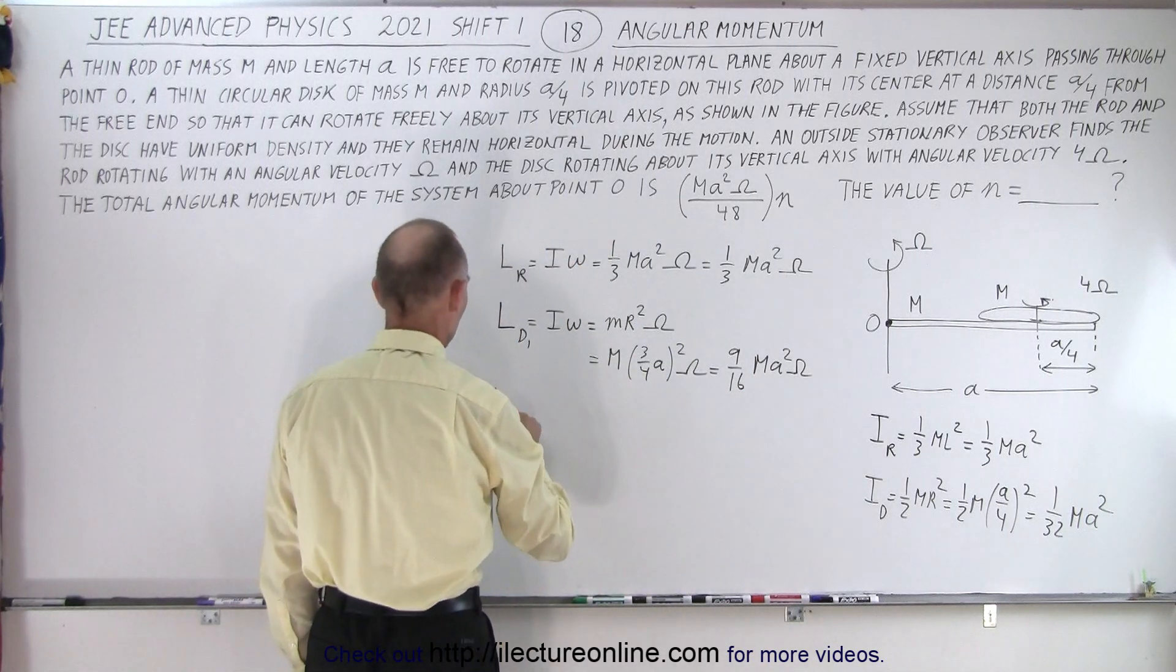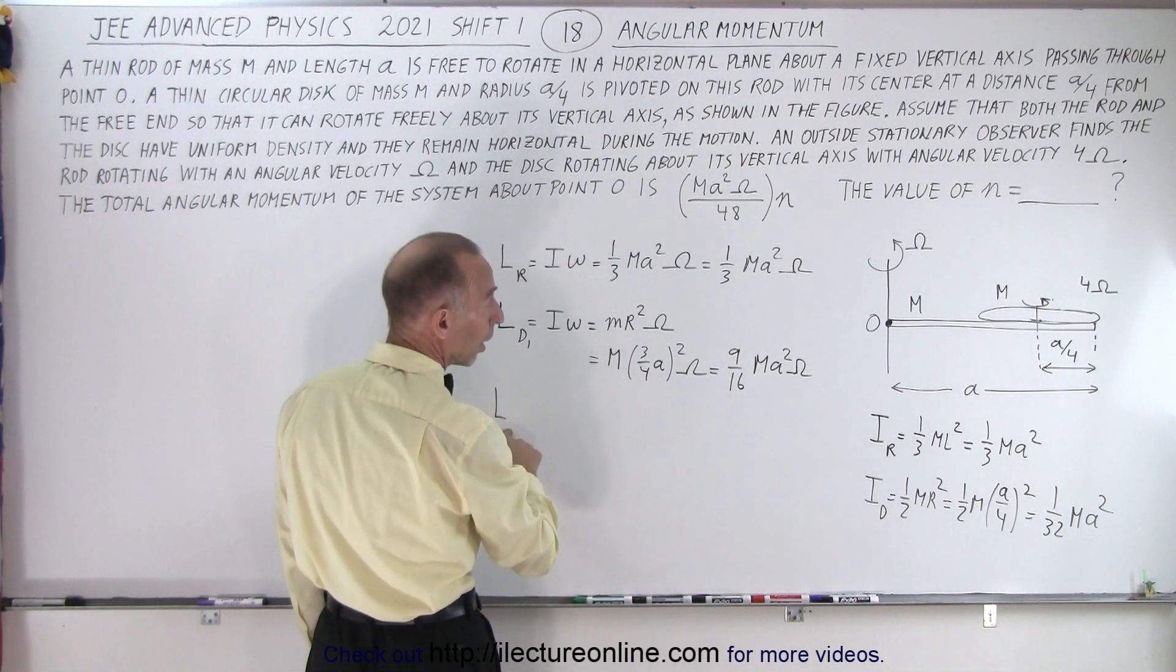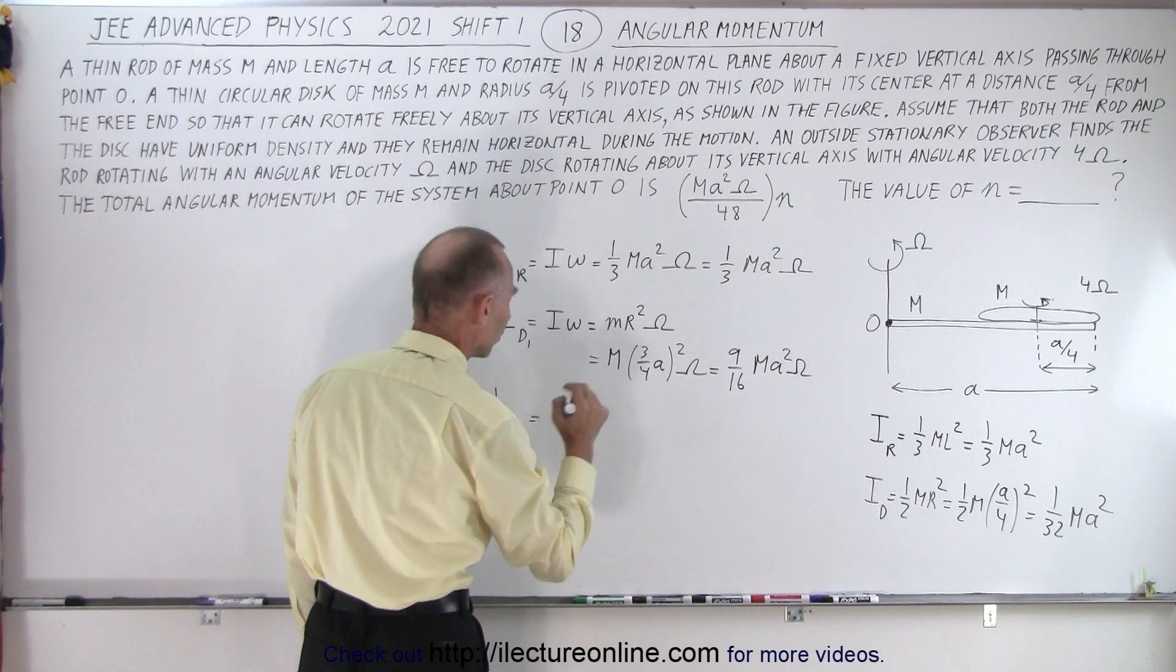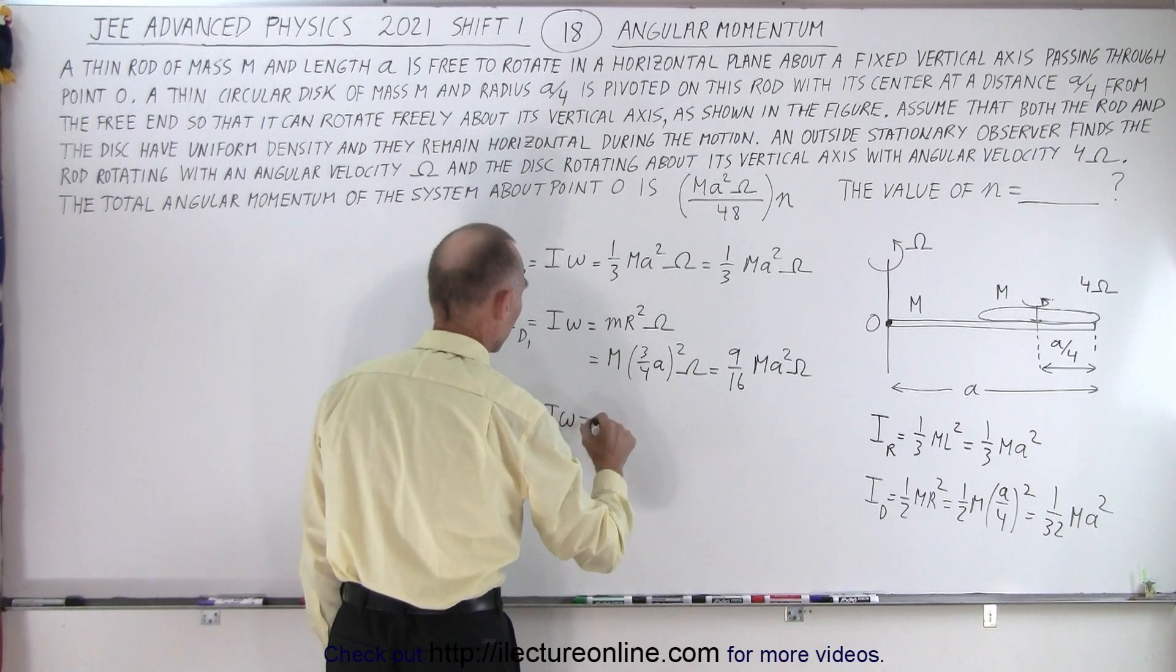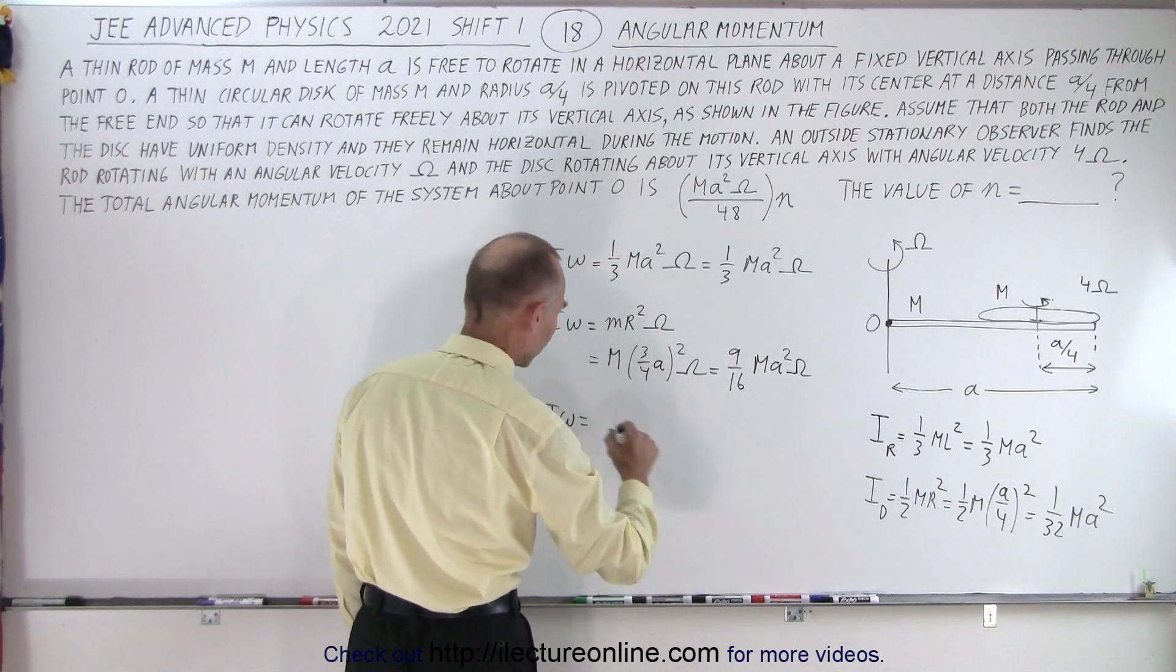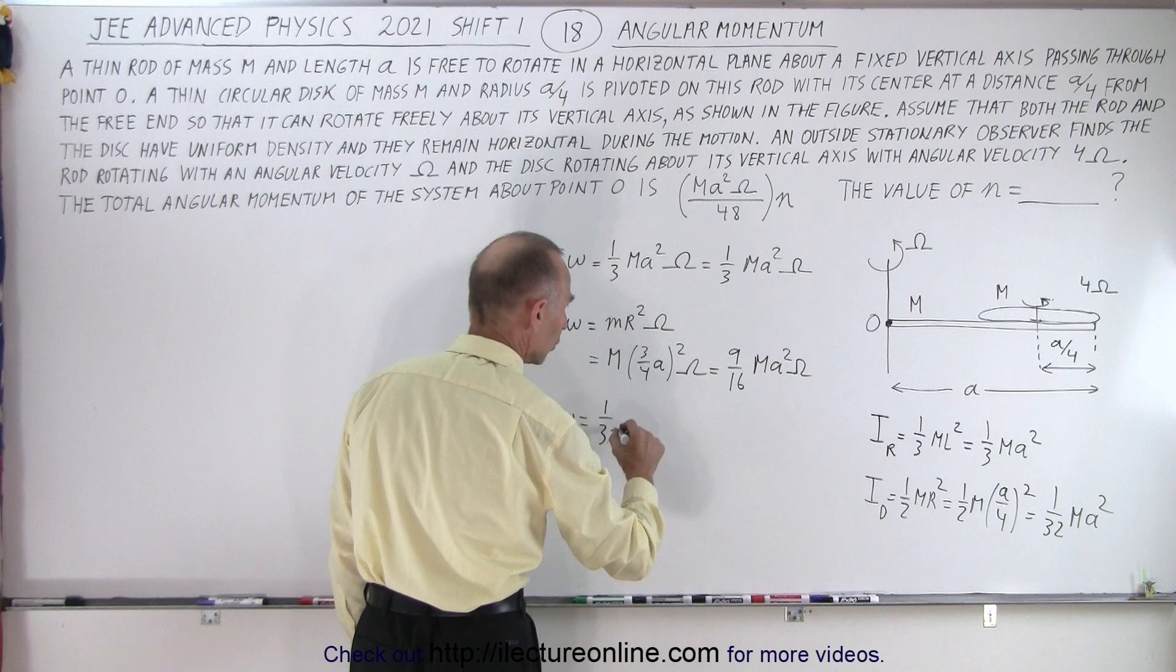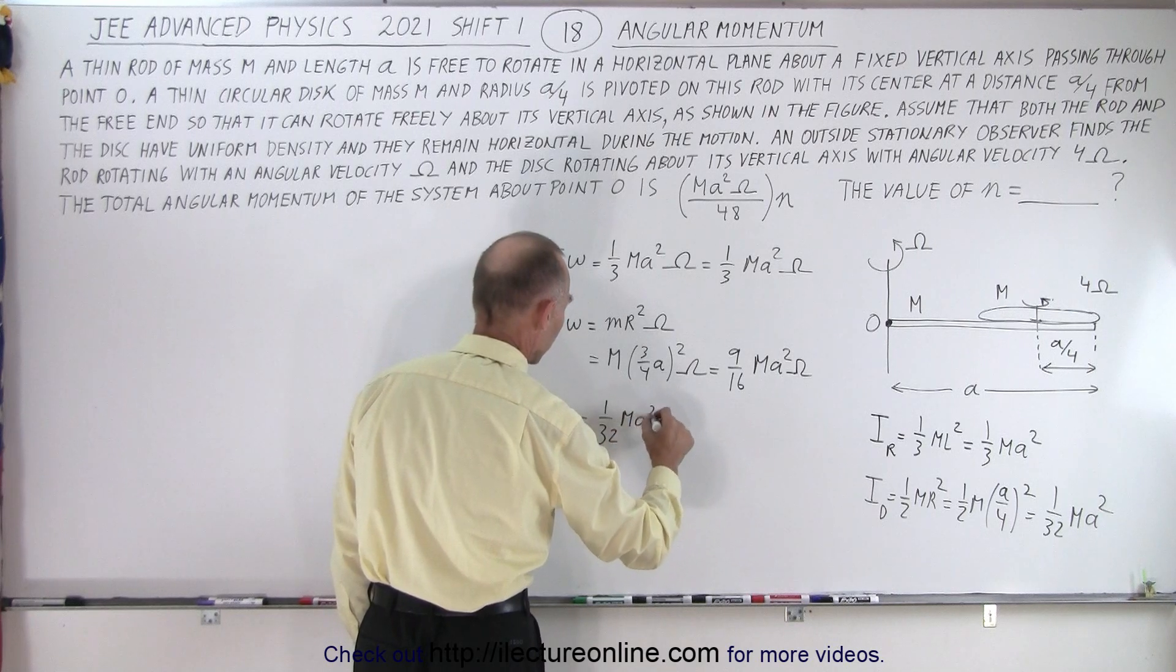Finally, we have the angular momentum of the disk, the second motion which is the rotation about its own axis which is i times omega which is equal to i is going to be 1 over 32 m a squared times omega.